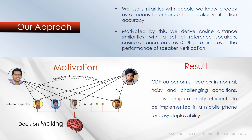State-of-the-art speaker recognition systems use i-vectors derived from the spectral characteristics of the speech as input. We use similarities of the speech with respect to a set of reference speakers, instead of i-vectors. Cosine distance similarity is used to measure the similarity of the target speaker with respect to the reference speaker, hence the name Cosine Distance Features, or CDF. CDF outperforms i-vectors in normal, noisy, and challenging conditions, and is computationally efficient to be implemented in a mobile phone for easy deployability.